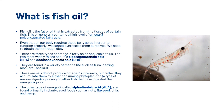EPA and DHA are found in a variety of marine life such as tuna, herring, mackerel and krill. These animals do not produce omega-3s internally; they accumulate them by consuming phytoplankton — a type of marine algae — or by preying on other fish that have ingested the omega-3s. The other type of omega-3, called alpha linolenic acid or ALA, is found primarily in plant-based foods such as nuts, flaxseed, chia and hemp.